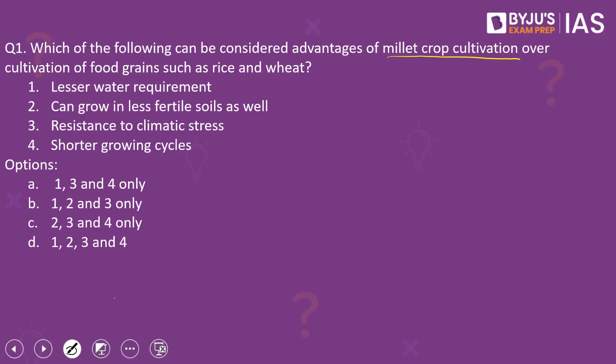Coming back to the question — let us understand what millets are. Millets are a group of small-seeded grasses, widely grown across the world as cereal crops or grains for fodder. They are important crops in the semi-arid tropics of Asia and Africa, and are chiefly grown in India, Mali, Nigeria and Niger. The most widely grown millets include sorghum, pearl millet, finger millet, proso millet, and foxtail millet.